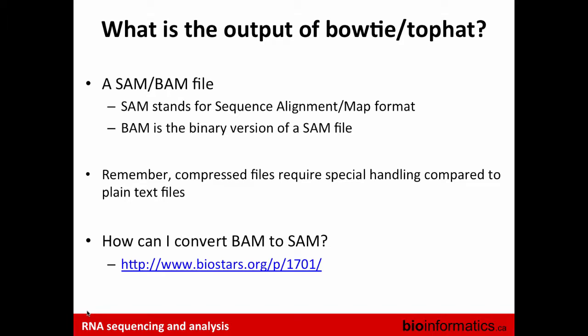The output of running your FASTQ file through the aligner and splice junction detector is a BAM file or SAM file. SAM stands for Sequence Alignment Map format; a BAM file is just the compressed binary version of that. A SAM file is a plain text file you can open and read directly, but for BAM you'll need tools to convert it or view its content. You save a lot of space by converting SAM to BAM — most downstream tools accept both formats.